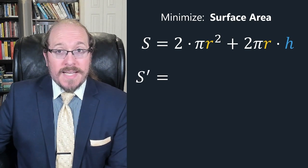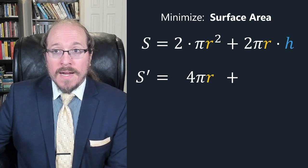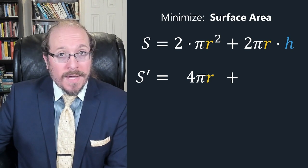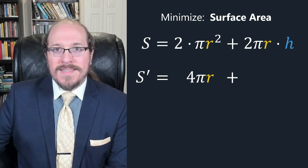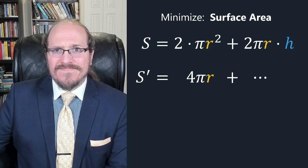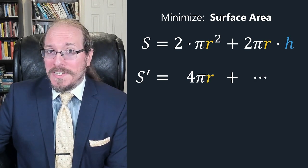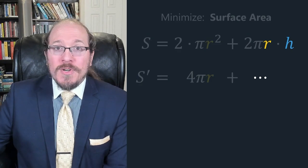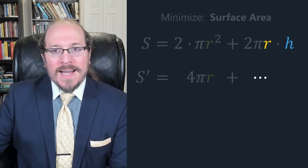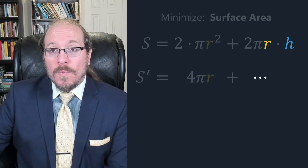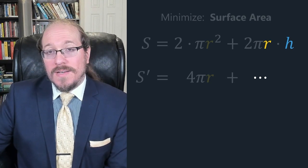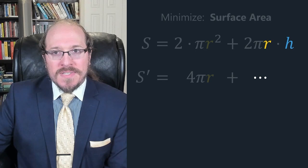Now we just take the derivative. The derivative of 2π r² is 4π r by the power rule and the derivative of 2π r h is... uh oh we've run into a problem here. We've got too many variables. Both the height and the radius matter here. If we change one of those we automatically change the other one. So we have to take both variables into account.